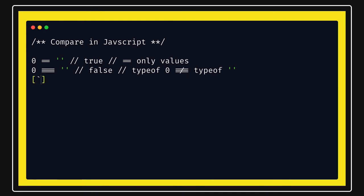For example, comparing an array with value one against true using double equals will result in true, because it is just comparing the value. These are some of the weird parts of JavaScript. To be clear: double equals checks only values, while triple equals compares both type and value.